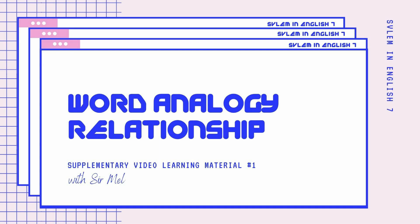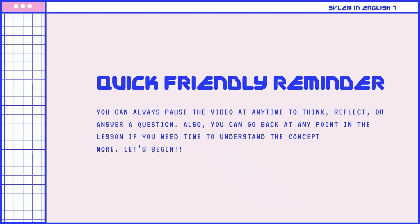Welcome to the supplementary video learning materials for English 7 with Sir Mel. Video lesson number 1: Word Analogy Relationship. Just a quick friendly reminder — you can always pause the video at any time to think, reflect, or answer a question. You can also go back at any point in the lesson if you need time to understand the concept more. Let's begin.